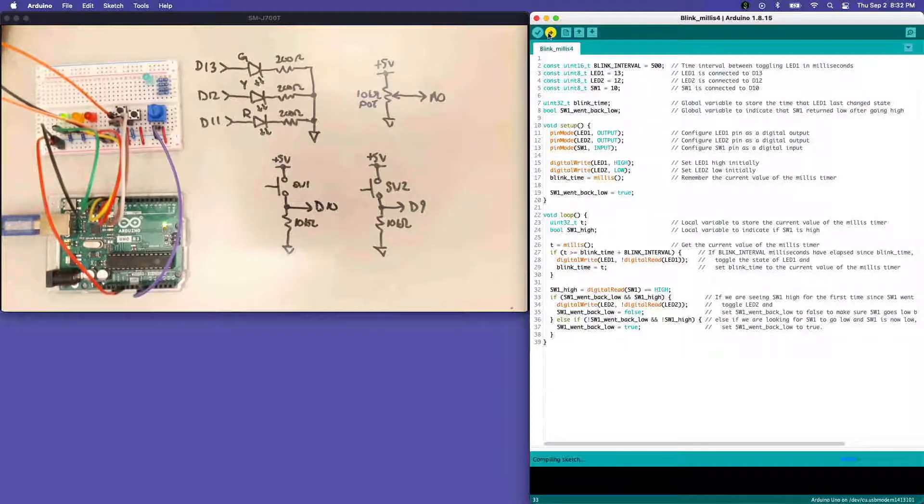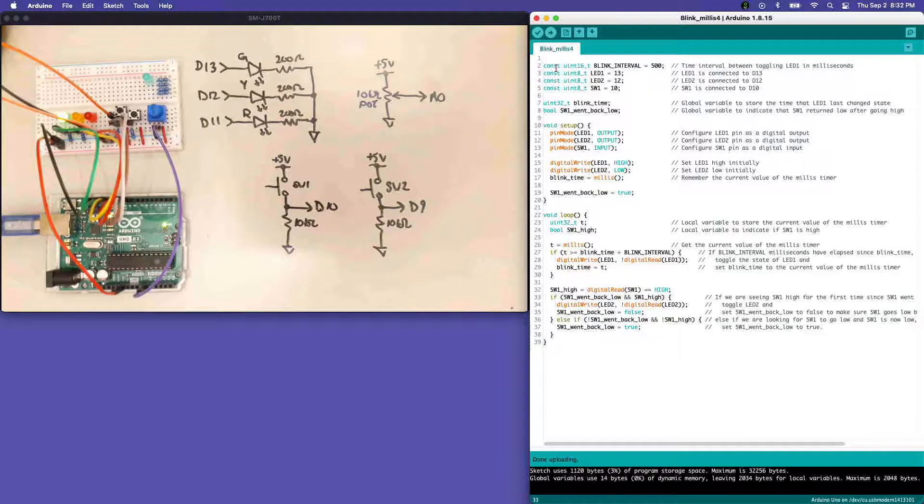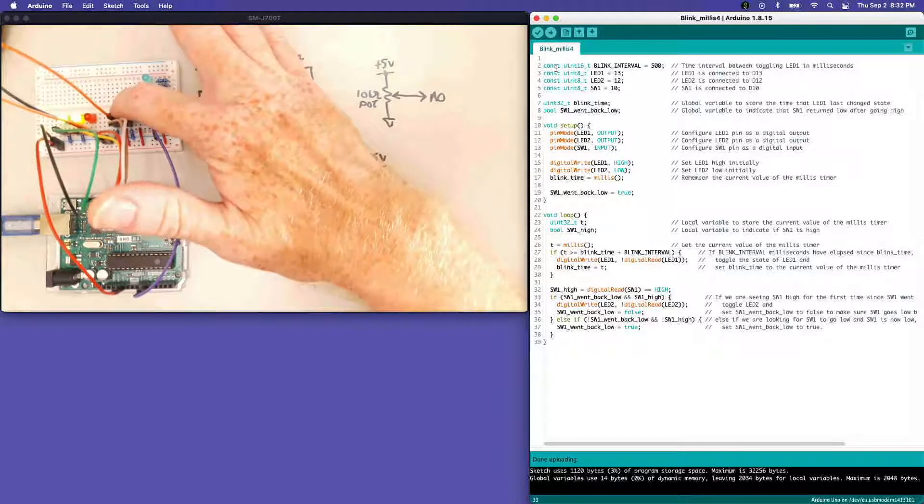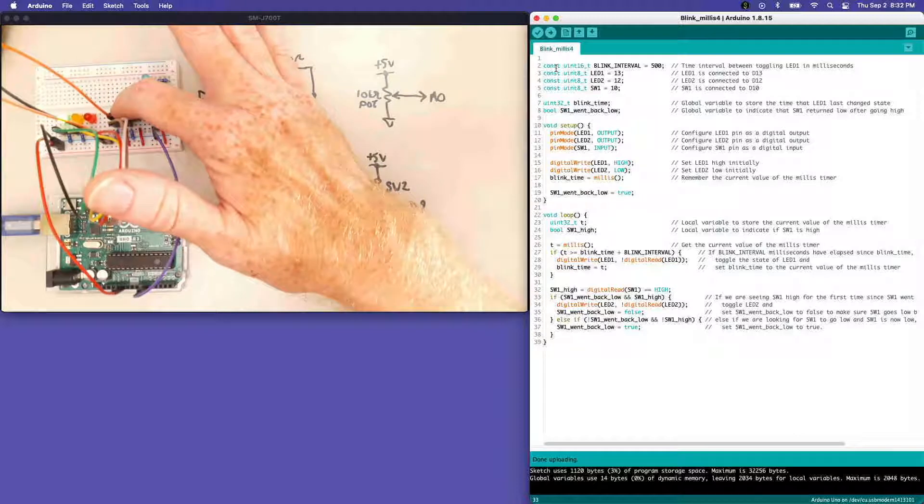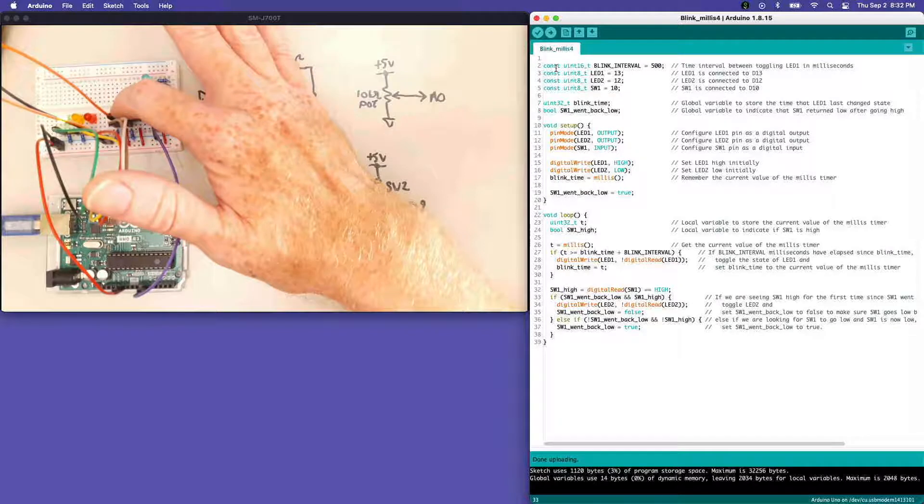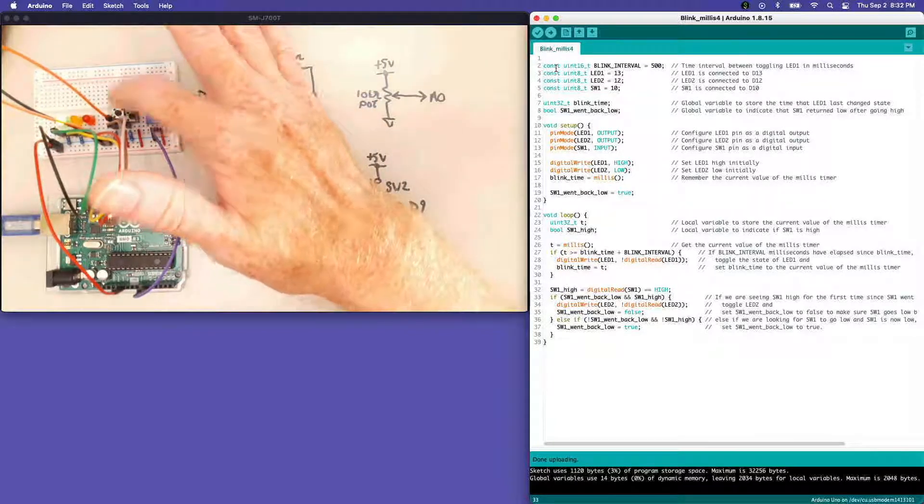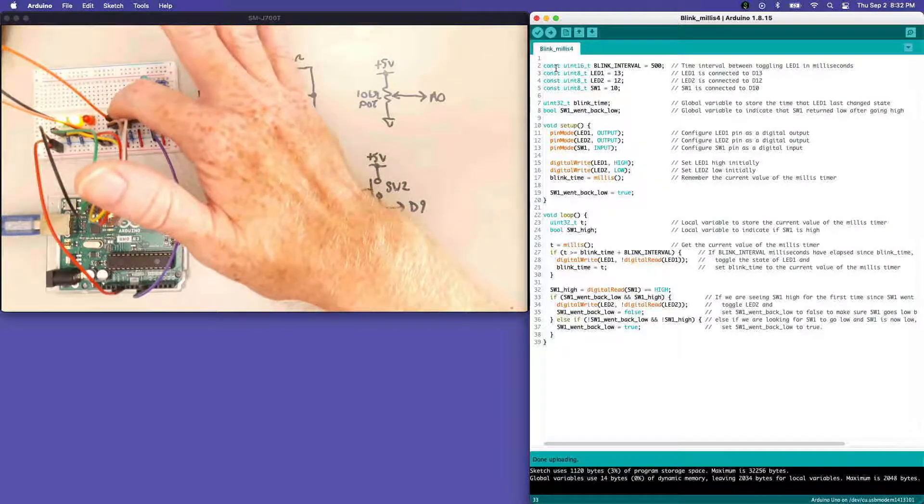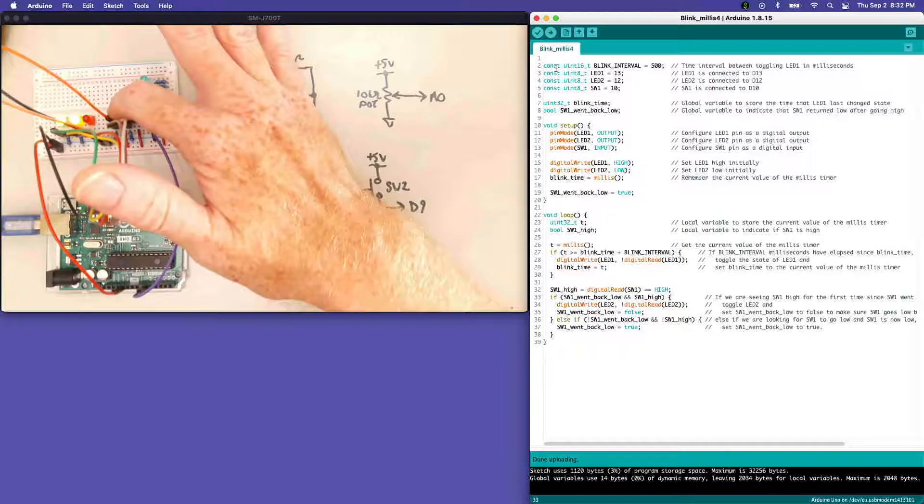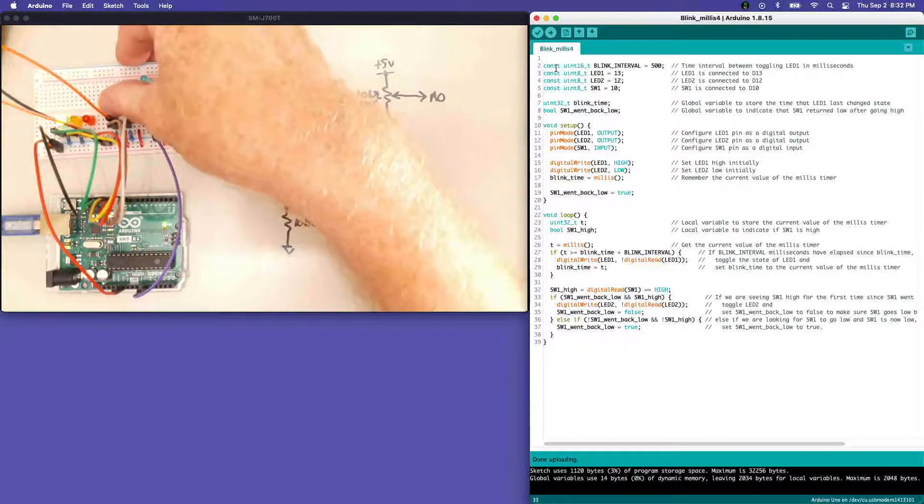Let's send this out to the board and see if it's running. If I push the button, you can see the LED toggles. Except there it did something weird, it went back off again. On, off, on, off, on, off, on. It's working reasonably reliably.